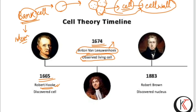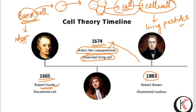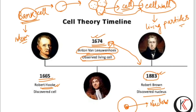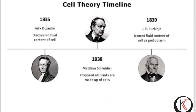Leeuwenhoek observed the living cell — meaning the living particles present inside the cell, beyond just the cell wall. Next in the timeline, in 1838, scientist Robert Brown discovered the nucleus: a prominent structure located at the centermost portion of the cell. He gave it the name 'nucleus.'